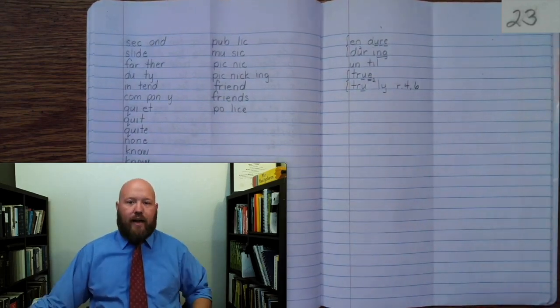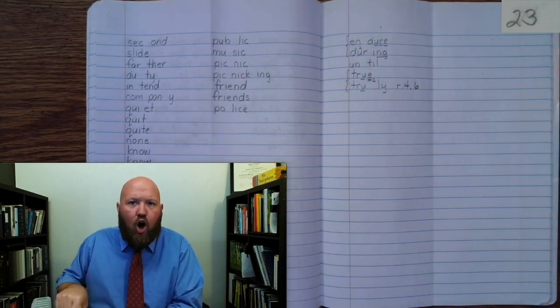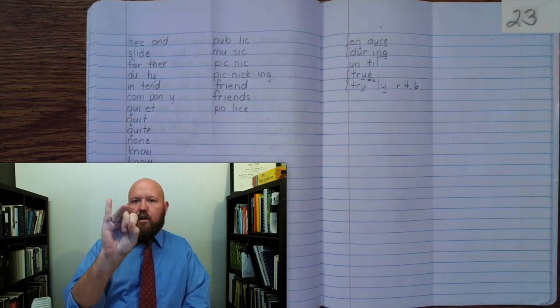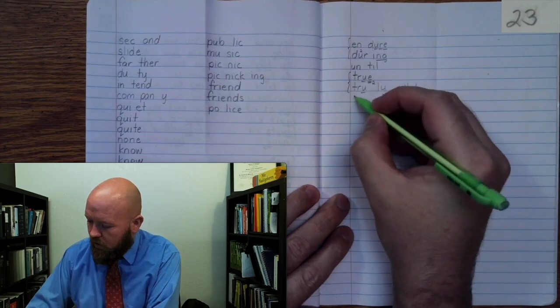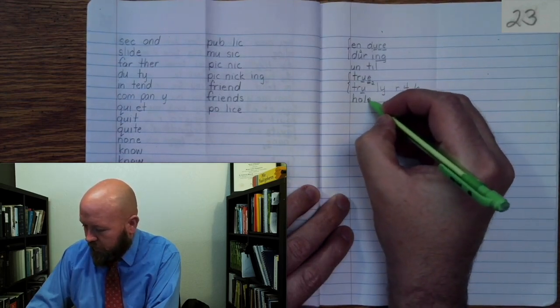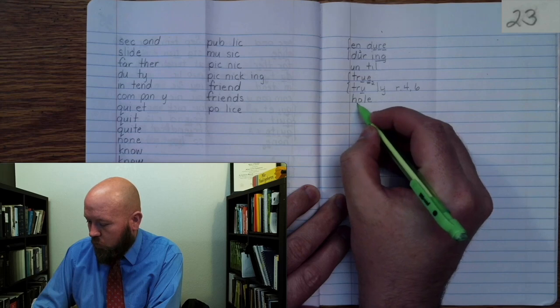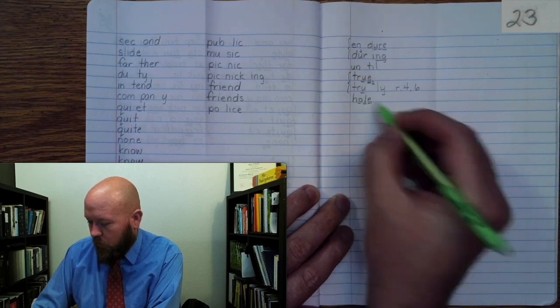The next word is hole. Like I dug a hole in the ground. Hole. H-O-L-E. Hole. H-O once, L once, E once. Hole.